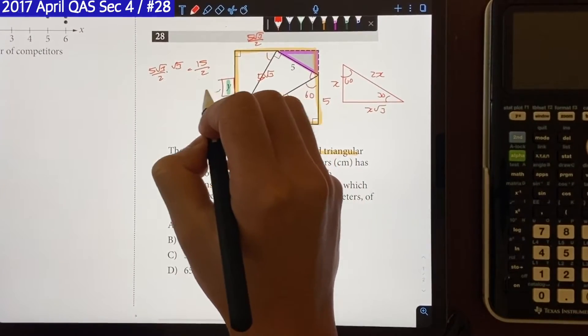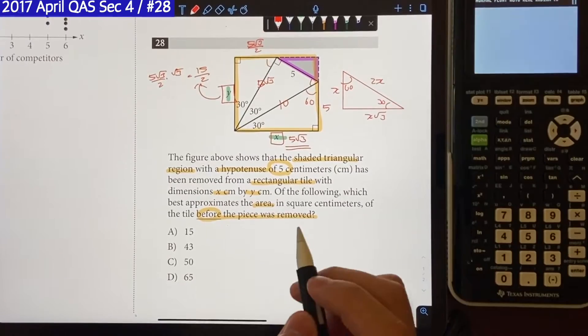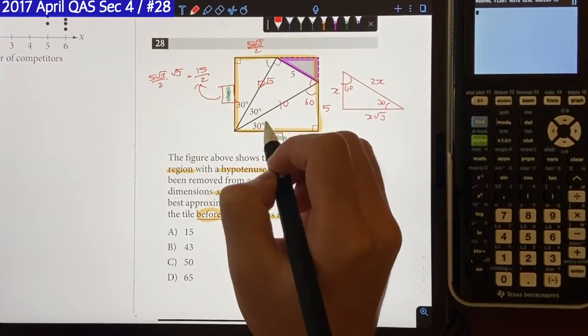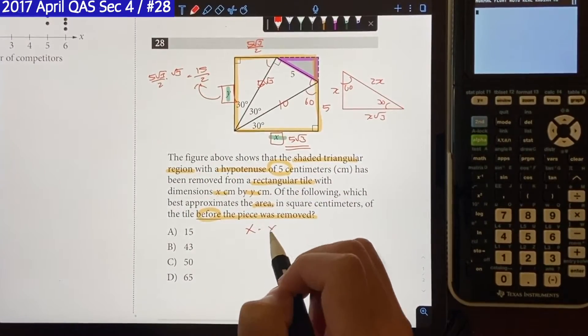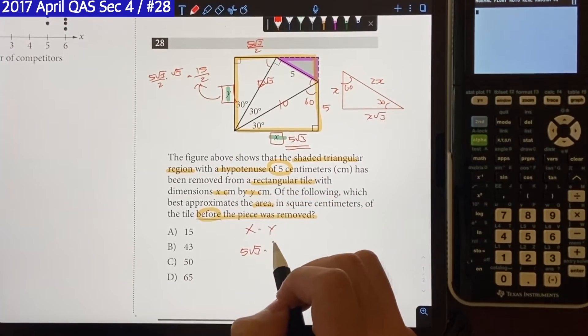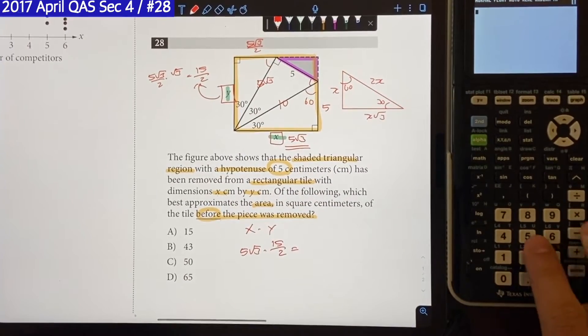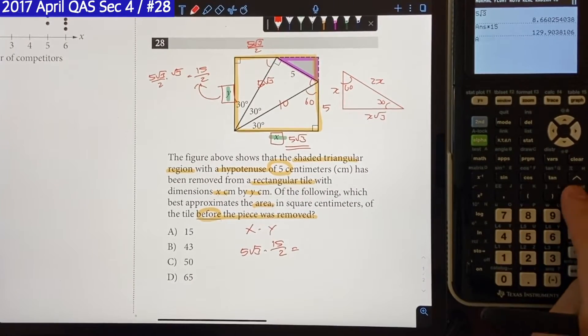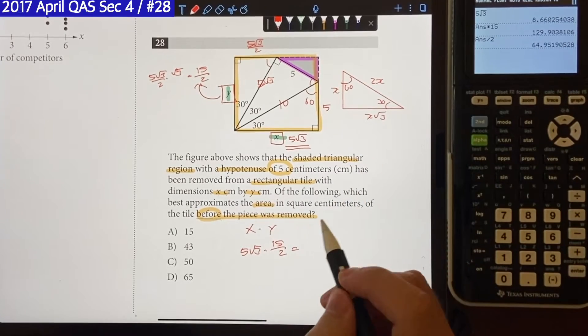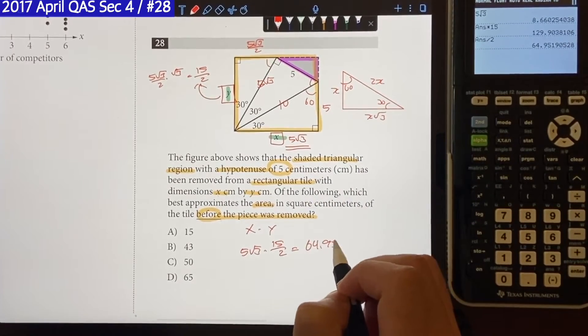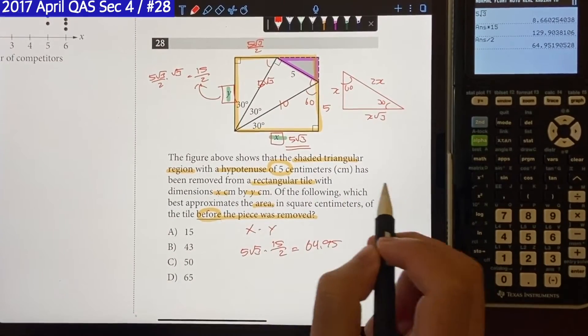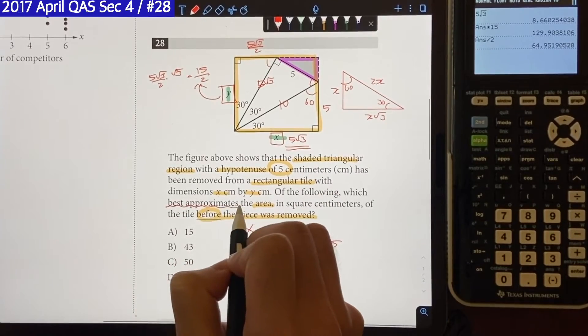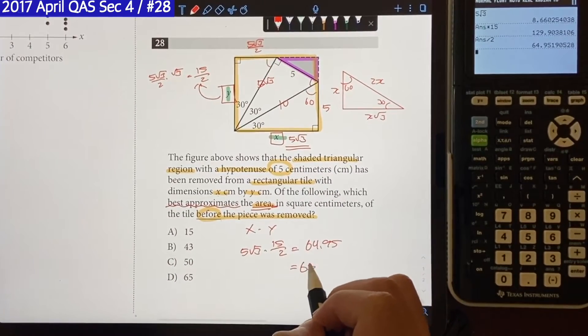Which means our y is going to be 15 over 2. And to find the area of the rectangle, we just multiply x and y together, which is going to be 5√3 times y, which is 15 over 2. And 5√3 times 15 divided by 2 is going to be 64.95. And none of the answer choices look like that, but the question is looking for the best approximate area. So we just round it up, which is going to be 65. The answer is going to be choice D.